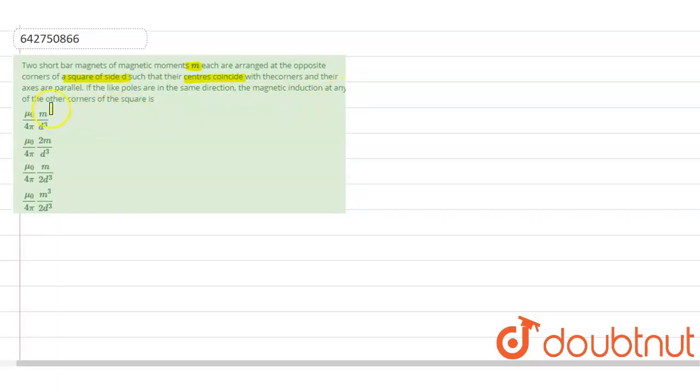The magnetic induction at any of the other corners of the square is, okay. So they have given us four options out here. Mu naught by 4 pi into m divided by d cube. Mu naught by 4 pi 2m divided by d cube. Mu naught by 4 pi m divided by d cube. And mu naught by 4 pi m cube divided by d cube.